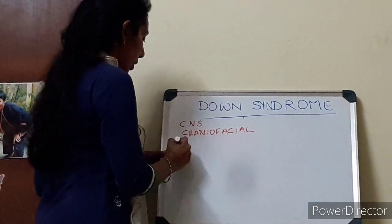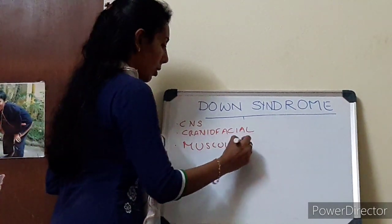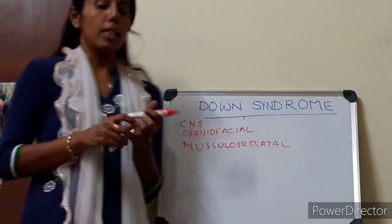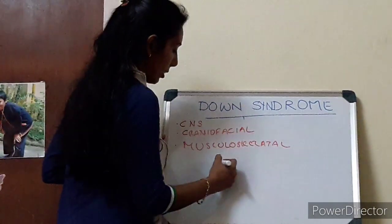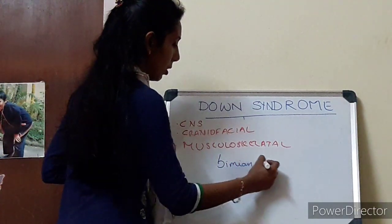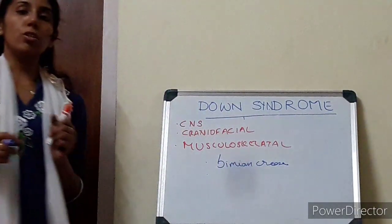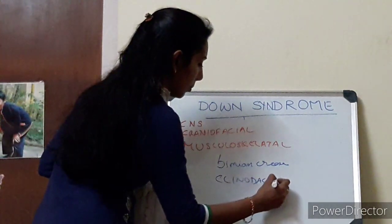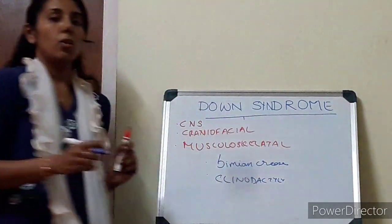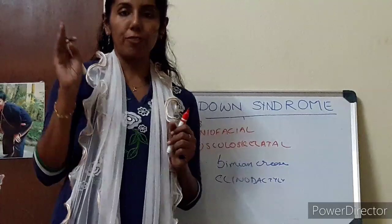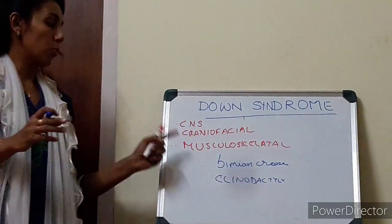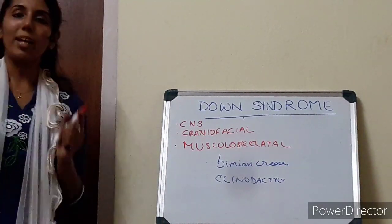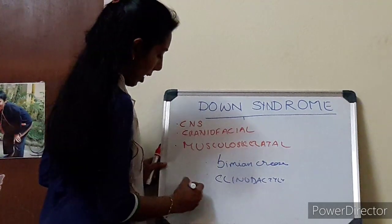Coming to the musculoskeletal part, when you see the hands of the child, you see that the child has a single palmar crease, which is called the simian crease. We also notice a finding called clinodactyly, which is a hypoplasia of the middle phalanx of the little fifth finger. So these two things are the hand features in Down syndrome: simian crease and clinodactyly. When you see the toes, there is a wide gap between the first and the second toes, and that is called the sandal gap.